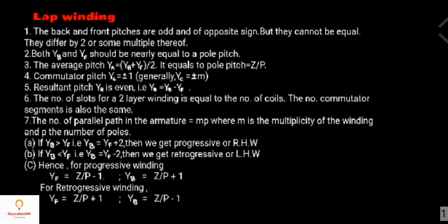If back pitch is greater than front pitch — that is, back pitch equals front pitch plus 2 — then we get progressive winding, or right-handed winding. For progressive winding, front pitch equals pole pitch minus 1 and back pitch equals pole pitch plus 1. For retrogressive winding, front pitch equals pole pitch plus 1 and back pitch equals pole pitch minus 1.